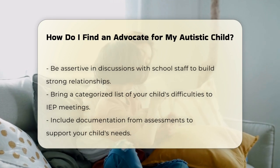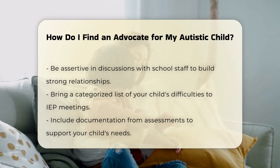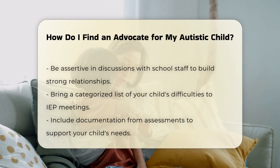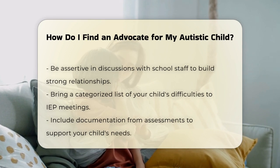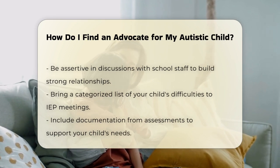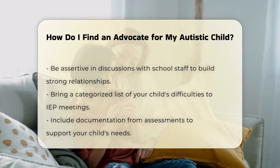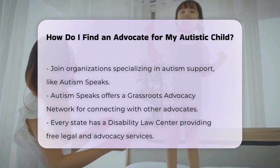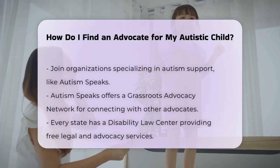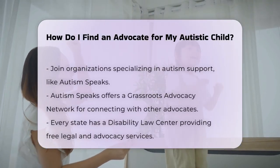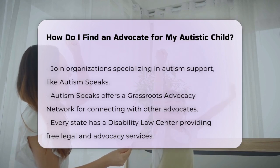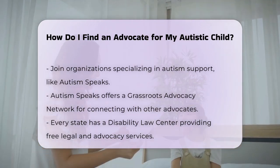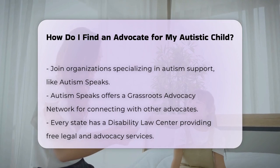For broader advocacy, consider joining organizations that specialize in autism support. Autism Speaks, for example, has a grassroots advocacy network where you can connect with other advocates, communicate with elected officials, and contribute to local events. They work on various policy issues, including science, health care, housing, education, and employment.